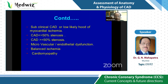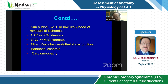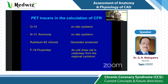CFR is also relevant in subclinical CAD or low likelihood of myocardial ischemia: CAD less than 50% stenosis, CAD more than 50% stenosis, microvascular or endothelial dysfunction, balanced ischemia, and cardiomyopathy. The PET tracers available include oxygen-15 water, nitrogen-13 ammonia, rubidium-82 chloride, and flurpiridaz, which is currently under development from cyclotron production.